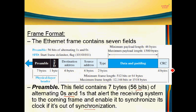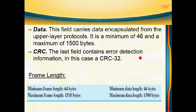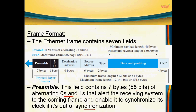The data comes from the upper layer. The minimum data size is 46 bytes and the maximum is 1500 bytes. CRC — Cyclic Redundancy Check — is used for error detection. These are the fields in the Ethernet frame.